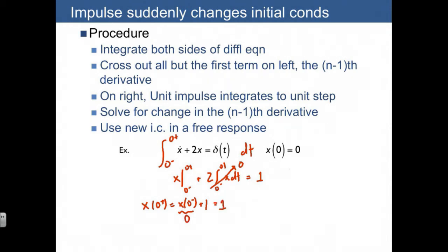If we try to sketch this, notice that it looks just like the plot we just made. We have x taking on values of 0, and then at time 0, it jumps up to a value of 1, and then it decays with a time constant of 0.5.